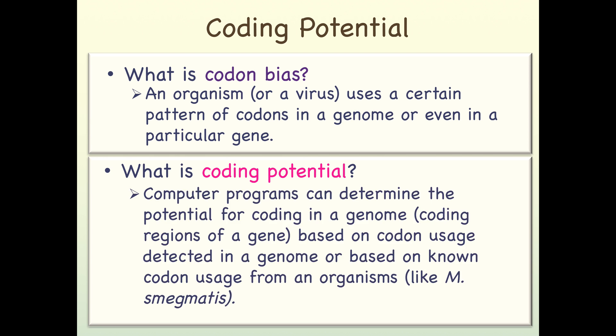What is coding potential? Computer programs can determine the potential for coding in a genome - coding regions of a gene - based on codon usage detected in a genome or based on known codon usage from an organism like M. smegmatis. The codon bias produces a pattern in the genome of the frequency of certain codons. The computer can learn from the codon usage of M. smegmatis and use those patterns, look for those same patterns of codon usage in a phage genome that infects M. smegmatis.